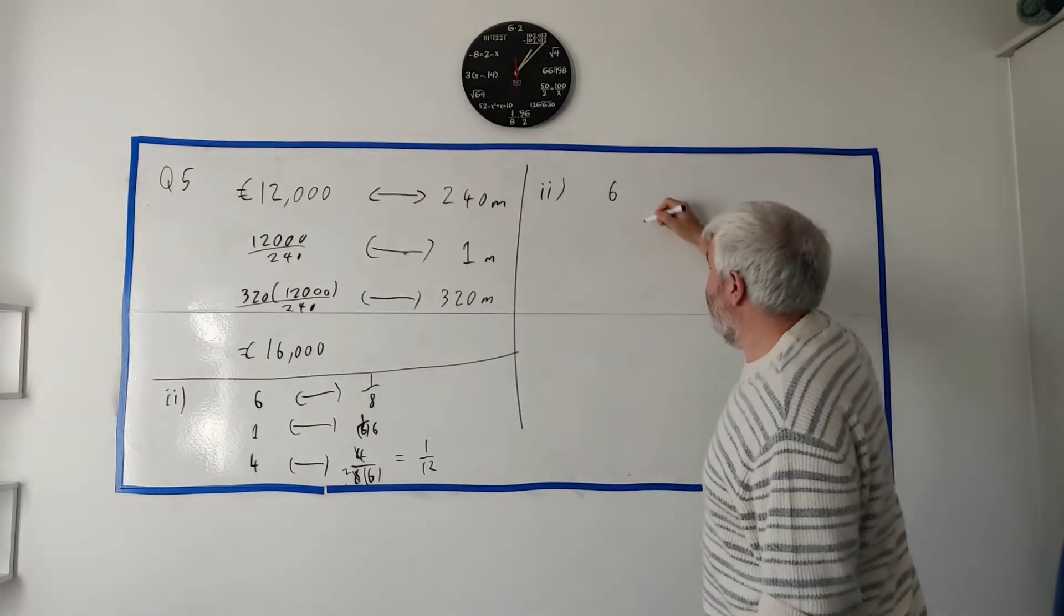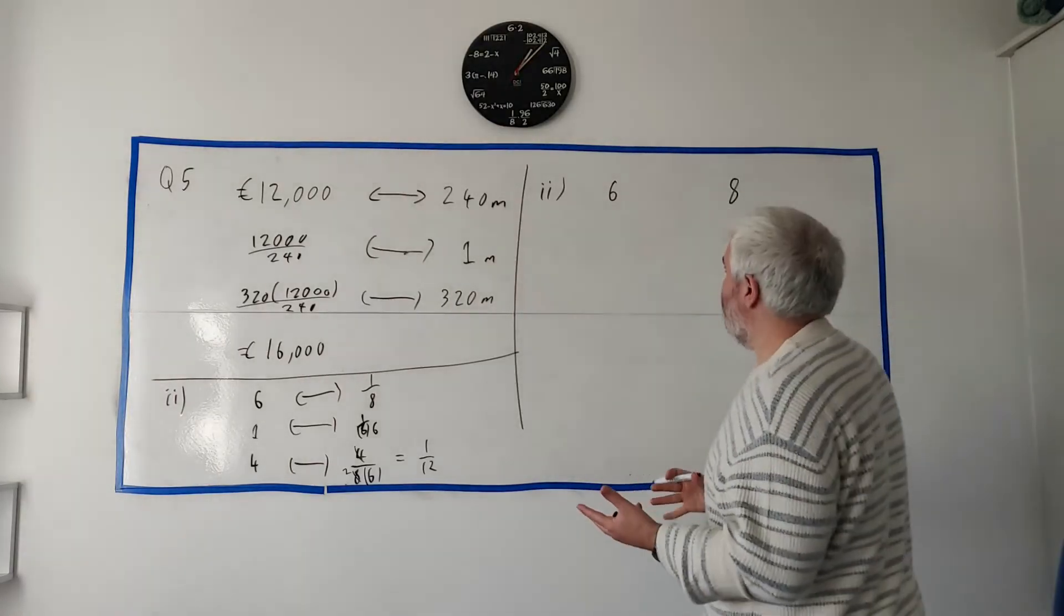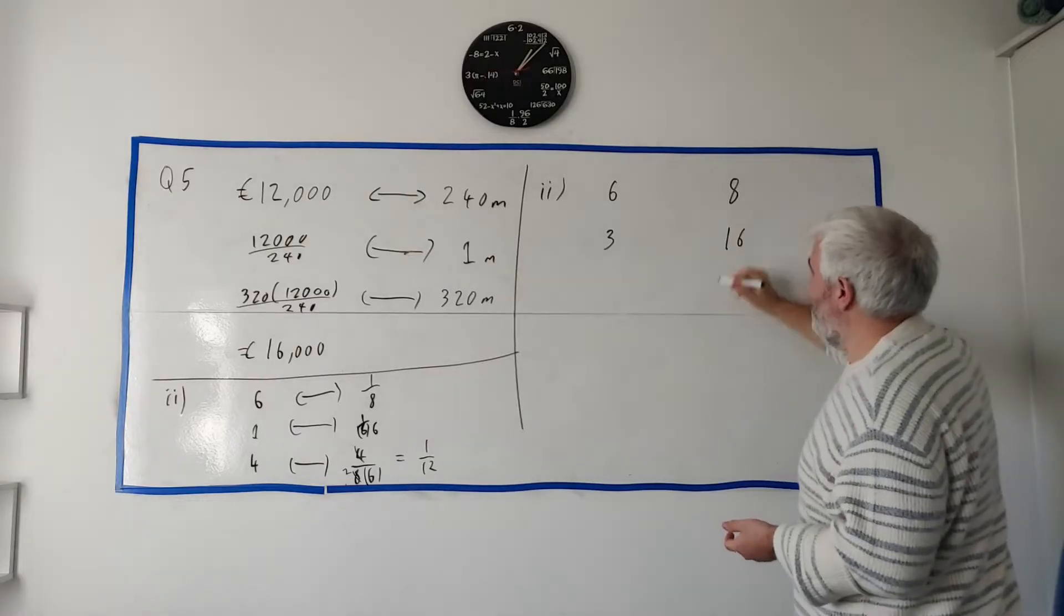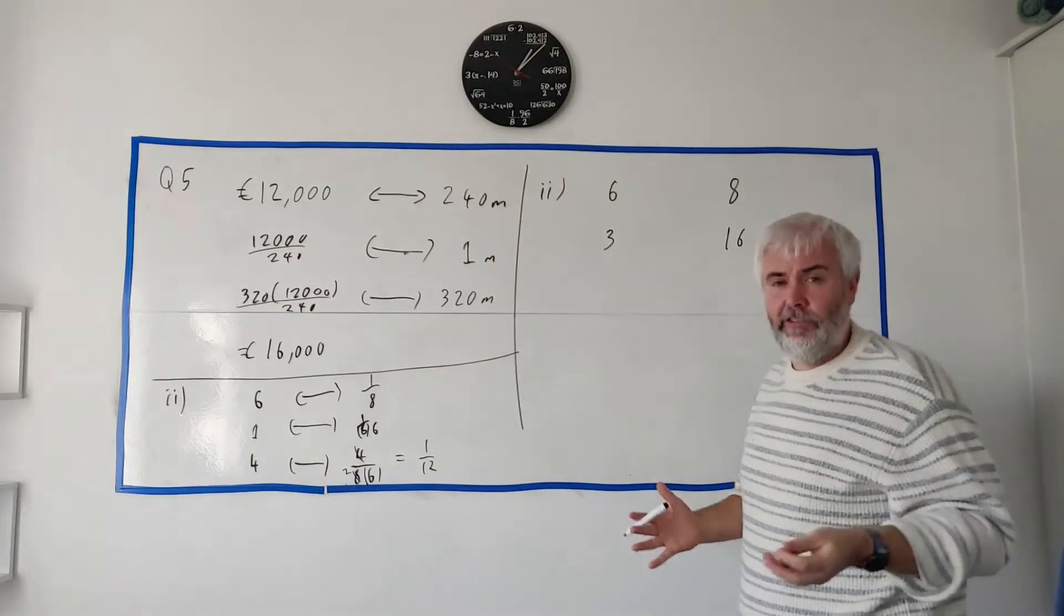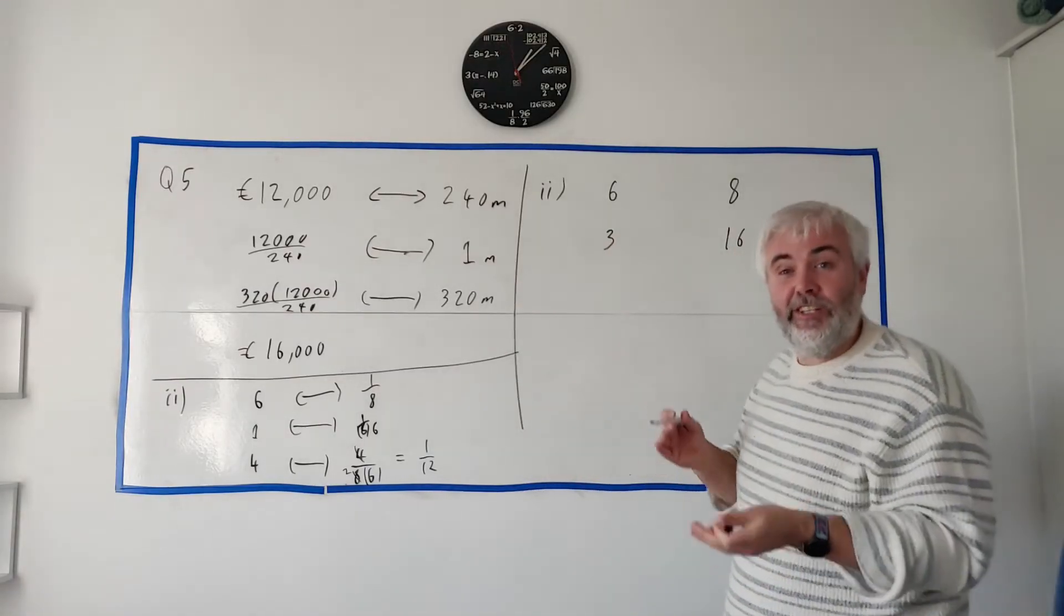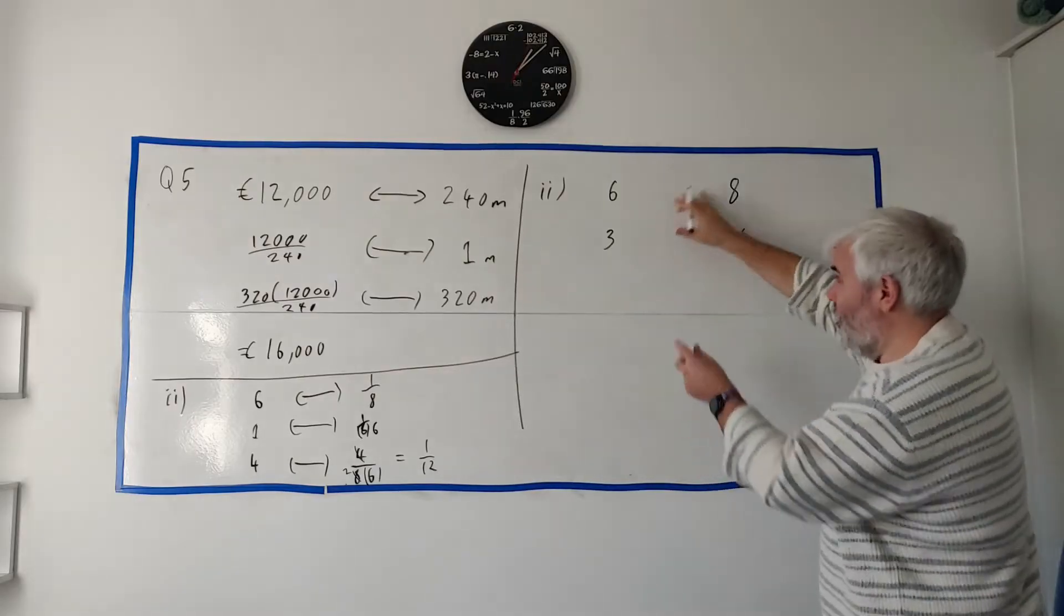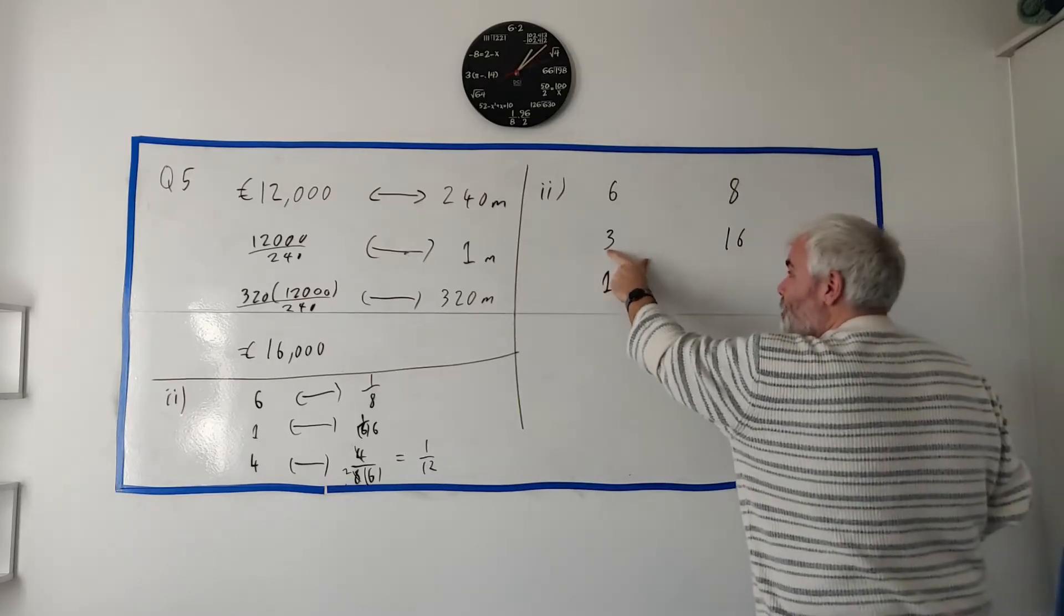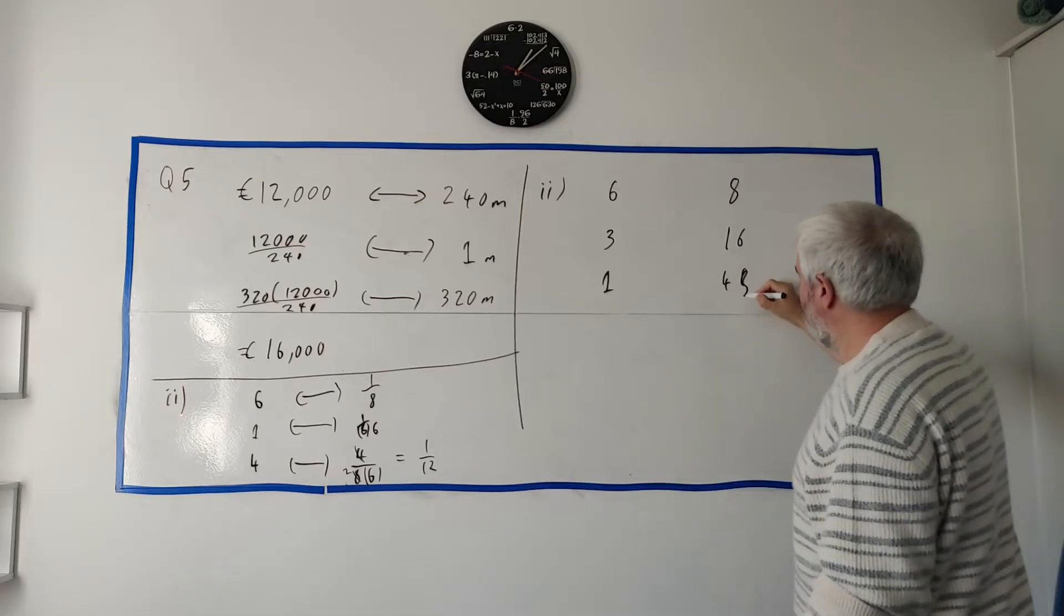Most students would probably just take six and eight and say six people working, eight days to do it, and then just play around with some numbers. For example, what if there was only three people working, half the people? It should take sixteen days. Lots of students are going to write down four here - half the people, half the days. That's the mistake a lot of students would make. Don't worry, probably 20-30% of people make that mistake. It means you're going too fast. Think it through. If half the people are working on a job, it should take twice the time.